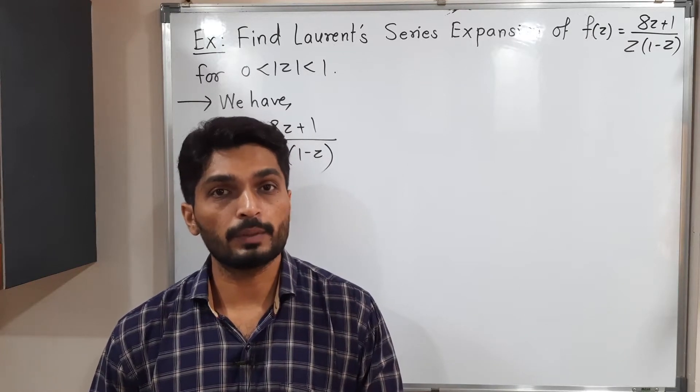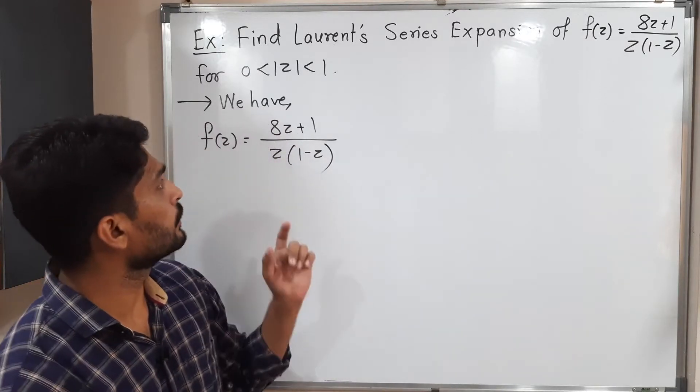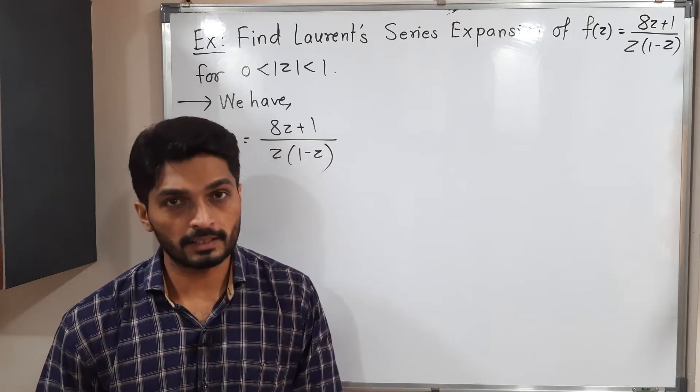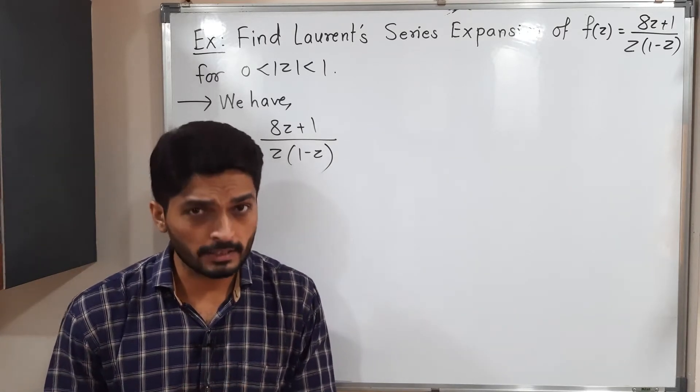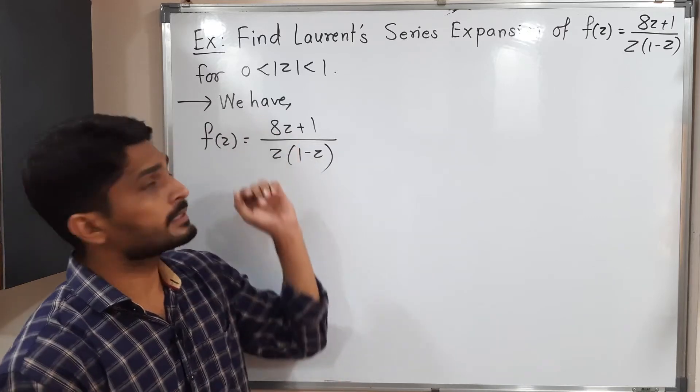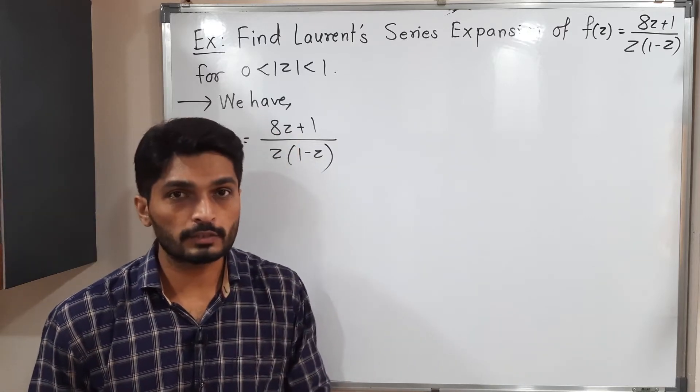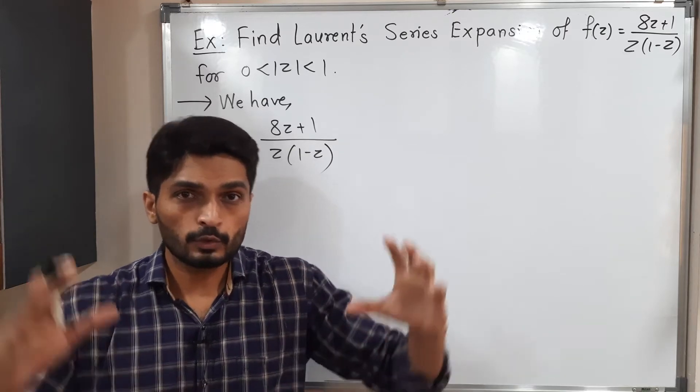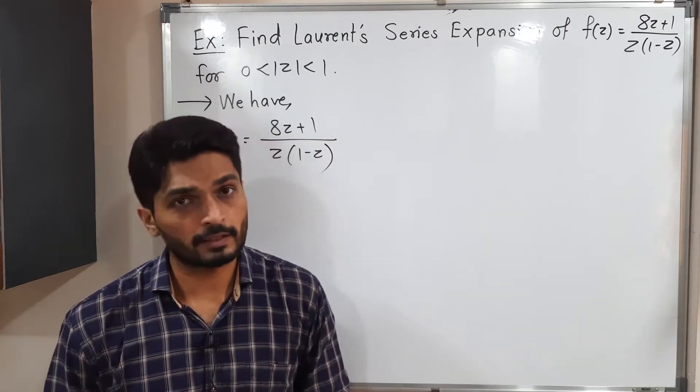Let us discuss this example. We have a function f(z) equal to 8z plus 1 upon z(1 minus z). We have to find its Laurent series for the region 0 less than |z| less than 1. That means |z| equals 1 is the equation of a circle with center at origin and radius 1. So this is the interior part of the circle.